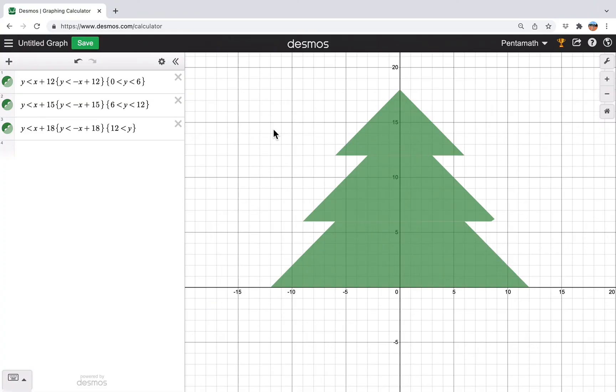Now we're almost done. What's our Christmas tree missing? Well, yes, it's missing a trunk. So all we need to do now is add a trunk. It's just going to be a small square.